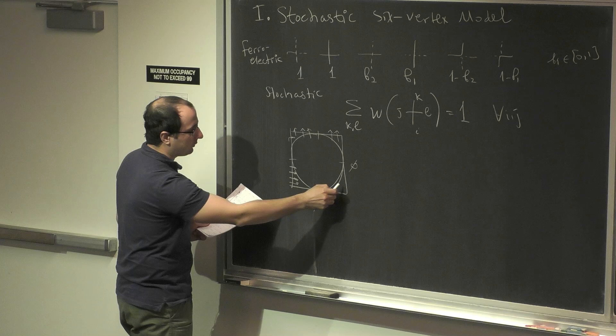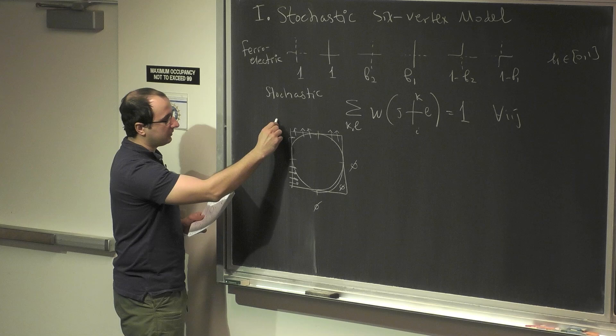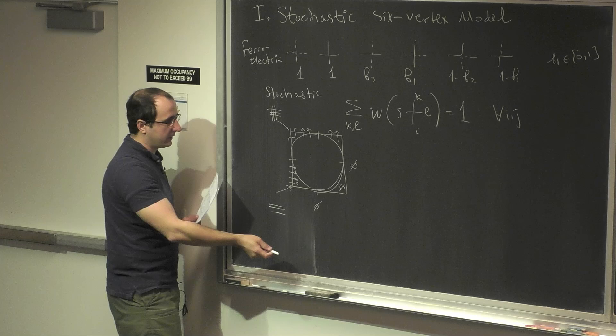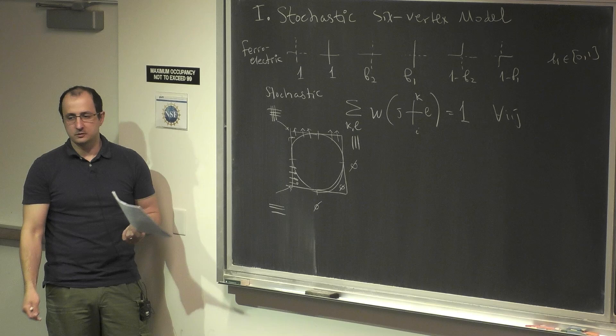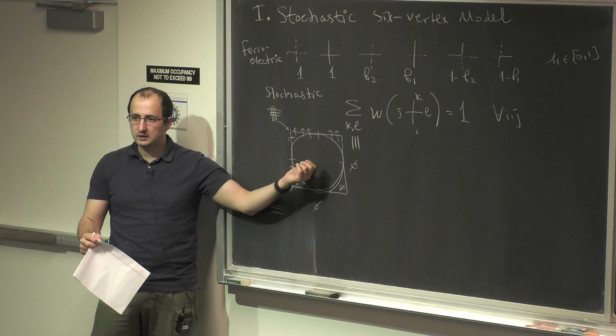The Arctic curve consists of four parts. One part separates emptiness from a random mixture of paths. Here you have a phase where the paths are densely packed in one direction, here packed in another direction, and here in yet another direction. Depending on the parameters it might be a symmetric curve. Amol Agarwal proved the existence of the curve and formulas for the curve, but we don't know the density inside, and we don't know how the local phases look.